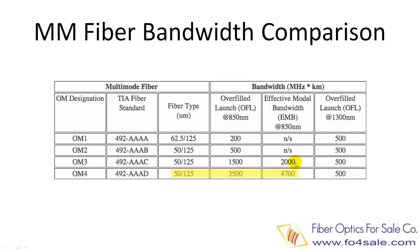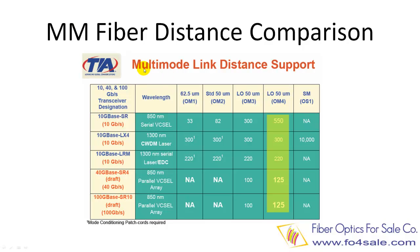We should focus on the EMB bandwidth column. OM3 fiber is also laser optimized for VCSEL lasers, but it only has a 2000 MHz·km EMB bandwidth, compared to OM4 fiber's 4700 MHz·km EMB bandwidth. This table shows the maximum distance multimode fibers can carry for different transmission data rates. It shows that OM3 fiber can carry 10 Gbps SR to 300 meters, whereas OM4 fiber can carry up to 550 meters. For 100 Gbps SR, OM3 fiber reaches 100 meters, whereas OM4 fiber can do it to 125 meters.